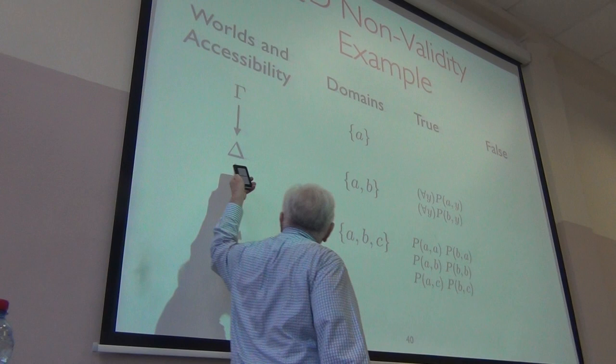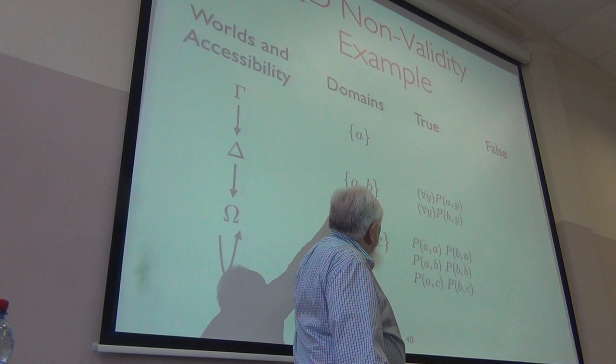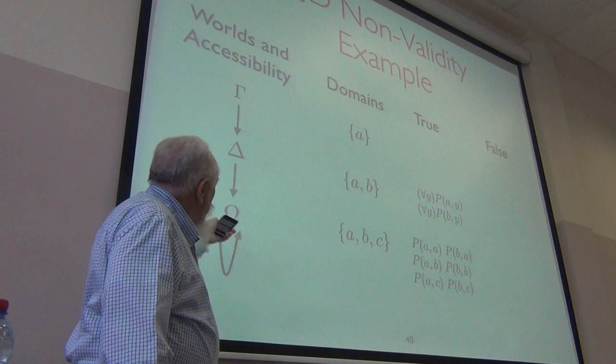For all Y, P of A,Y is true here. Because every instance of it down here is true. This is the only world accessible from this. The same thing for the other one.